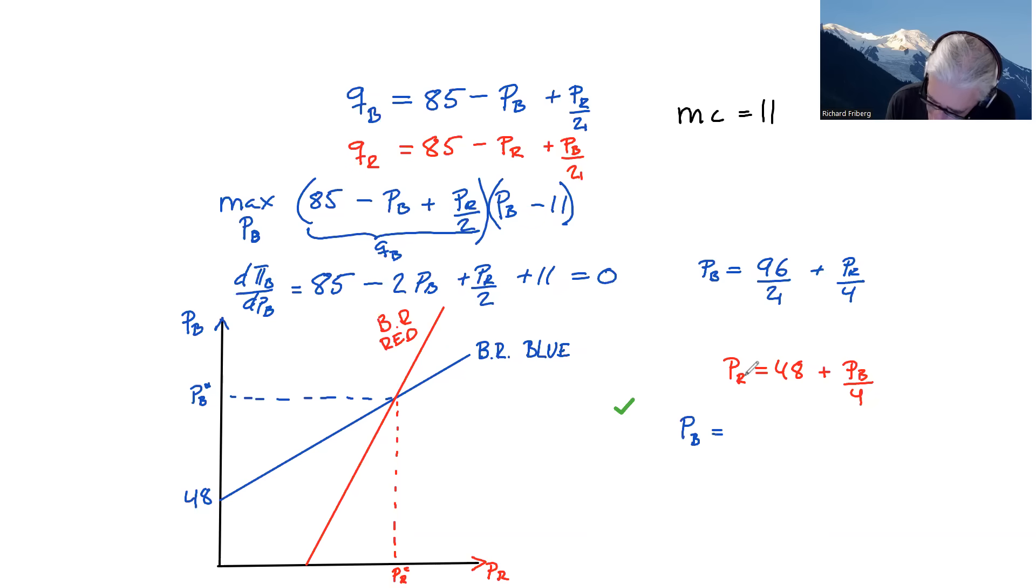So here, PB equals what? 96 over 2. We said this is 48 plus, now we're inserting the PR, so divided by 4. So we multiply by 1 over 4. So 48 here plus PB over 4, like that.